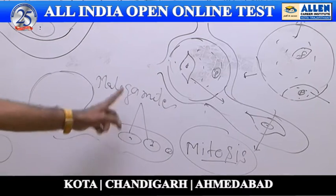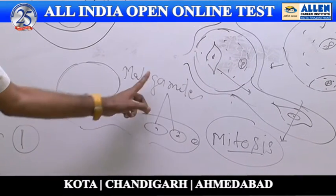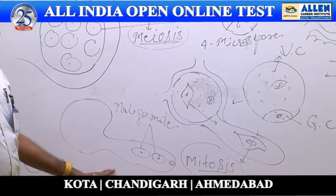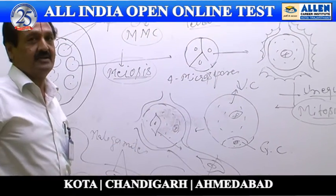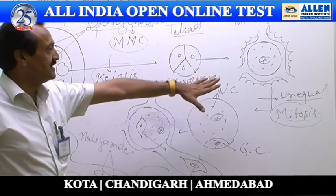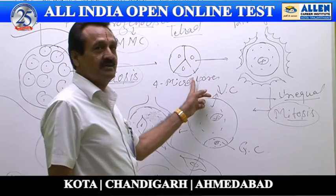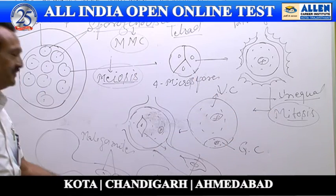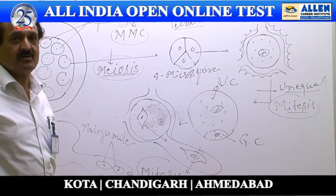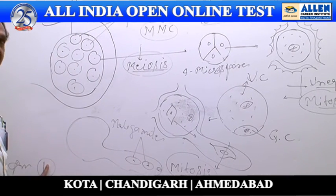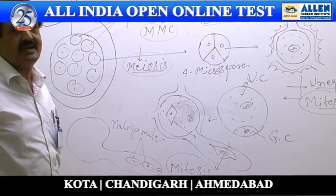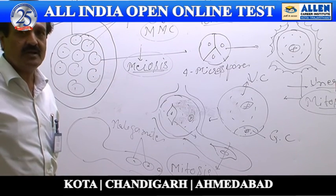Inside the pollen tube, the generative cell again divides by mitosis, and as a result two male gametes are formed. So in the entire process of development of the male gametophyte, the answer is: one meiosis and two mitotic divisions are required for the complete development of the male gametophyte of a flowering plant.